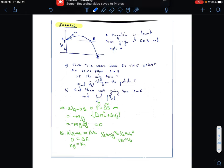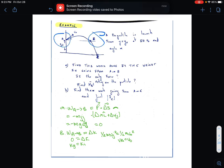All right, so find the work done by the weight in going from A to B, correct? So we have this trajectory going on over here.